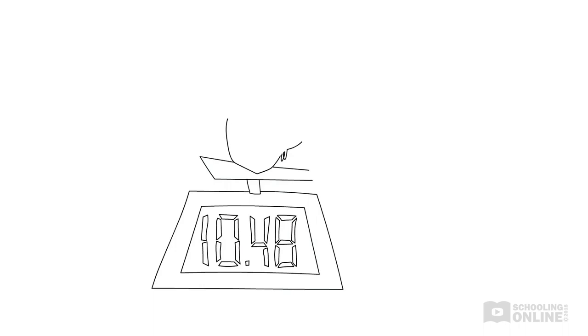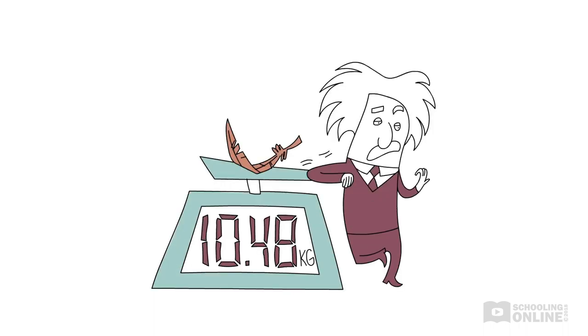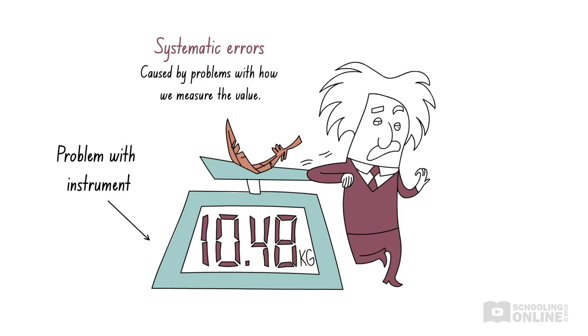But what gives us systematic errors in our experiments? Systematic errors are almost always a result of problems with how we have measured the value. That is, there is a problem with the instrument we are using to take the measurement, or there is a problem with the way in which we are using the instrument.